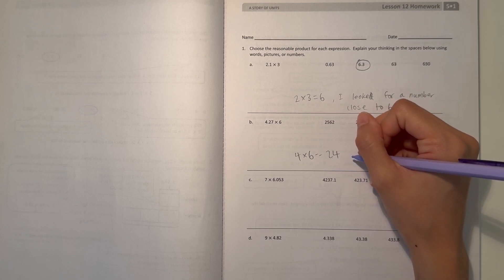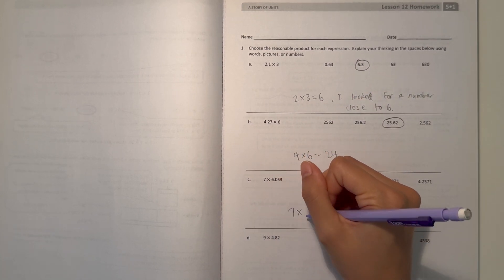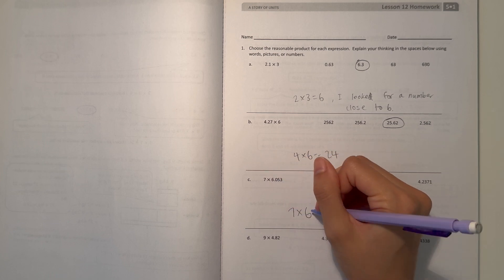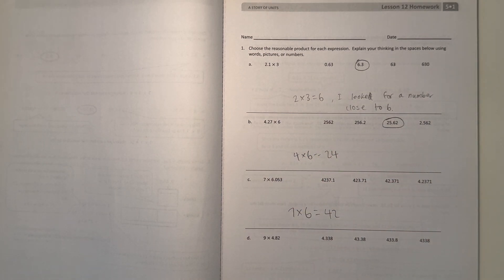Alright, and C, 7 times 6.053. 7 times 6, because 6 is pretty close to that number, would give us 42. So then we know our answer must be around 42.